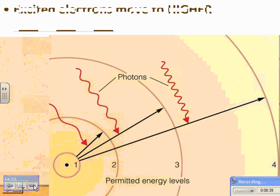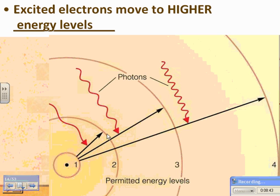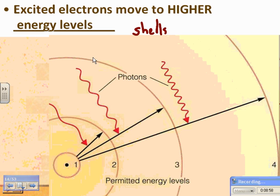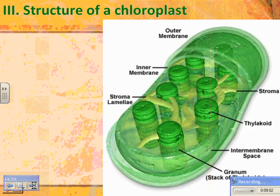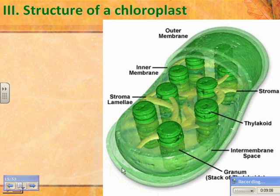Excited electrons move to higher energy levels, also called energy shells around the nucleus. Each energy level has more energy than the one below it. Now let's look at the structure of a chloroplast — you should know generally what one looks like. It has two membranes: an outer membrane and an inner membrane.